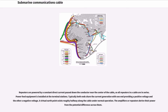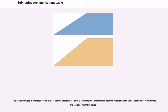Repeaters are powered by a constant direct current passed down the conductor near the center of the cable, so all repeaters in a cable are in series. Power feed equipment is installed at the terminal stations. Typically both ends share the current generation, with one end providing a positive voltage and the other a negative voltage. A virtual earth point exists roughly halfway along the cable under normal operation. The optic fiber used in undersea cables is chosen for its exceptional clarity, permitting runs of more than between repeaters to minimize the number of amplifiers and the distortion they cause.